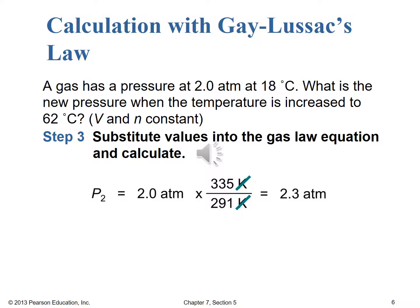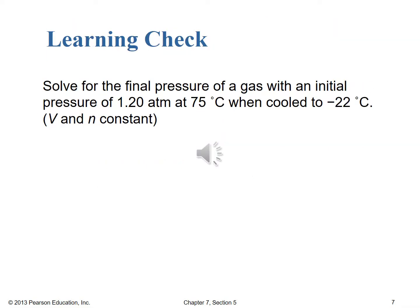Now we'll get ready for a learning check for you to do on your own. Solve for the final pressure of a gas with an initial pressure of 1.20 atmospheres at 75 degrees Celsius when cooled to minus 22 degrees Celsius. Volume and number of moles are held constant. Convert those temperatures to Kelvin and solve for the final pressure. Pause the video, do your steps, then start it back up.